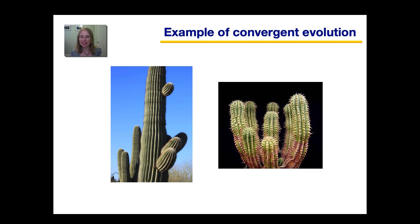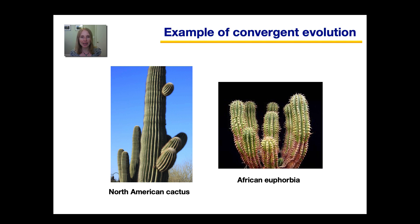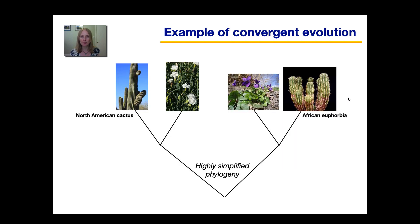I'd like to give you an interesting example of convergent evolution. When you look at these pictures of these two plants, wouldn't you think they're both cactuses? But actually, only the one on the left is a cactus. This plant belongs to a family of plants called Cactaceae, which evolved in the continents of South America and North America, whereas the one on the right belongs to a family called Euphorbiaceae, which evolved in Africa. When we trace back their evolutionary history, we can see that this cactus shares a more recent common ancestor with carnations than it does with the euphorbia, and the euphorbia shares a more recent common ancestry with violets than it does with the cactus.